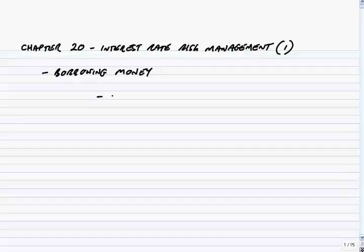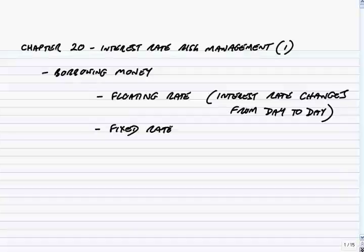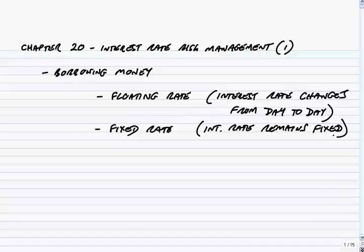There are two standard ways of borrowing money. You can either borrow at floating rate — and if you borrow at floating rate, the interest changes from day to day and you pay whatever the interest happens to be, on almost a daily basis. Or alternatively, you can borrow money on a fixed rate basis, in which case the interest rate remains fixed. If you negotiate a six-month loan at a fixed interest rate of, let's say, 10%, then it stays at 10%. Whatever happens to interest rates in the future is irrelevant to you.